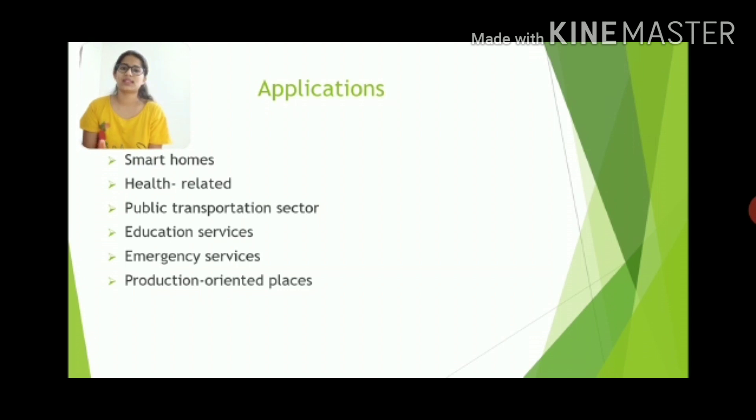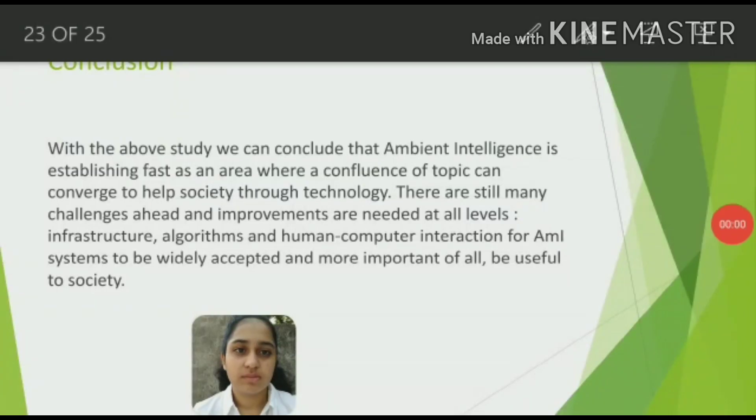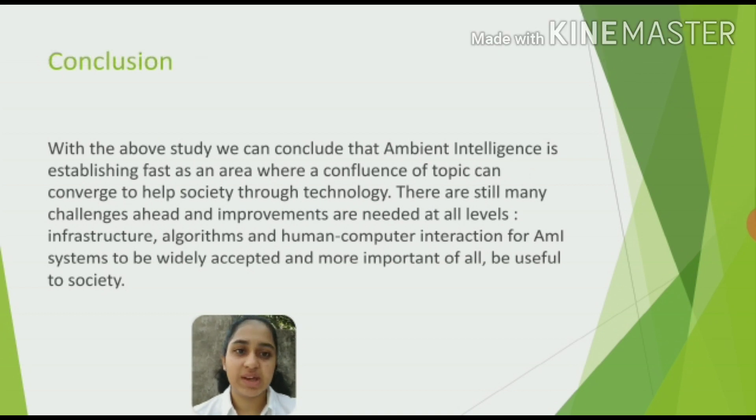Now examples of ambient intelligence can be guests are going to come at Alain's home, so AMI suggests best restaurants nearby to its area and searches food items on social media. Concluding this, with the above study we can conclude that ambient intelligence is establishing fast as an area where the confluence of topics can converge to help society through technology. There are still many challenges ahead and improvements are needed at all levels: infrastructure, algorithms and human-computer interaction for AMI systems to be widely accepted and more important of all, be useful to society.